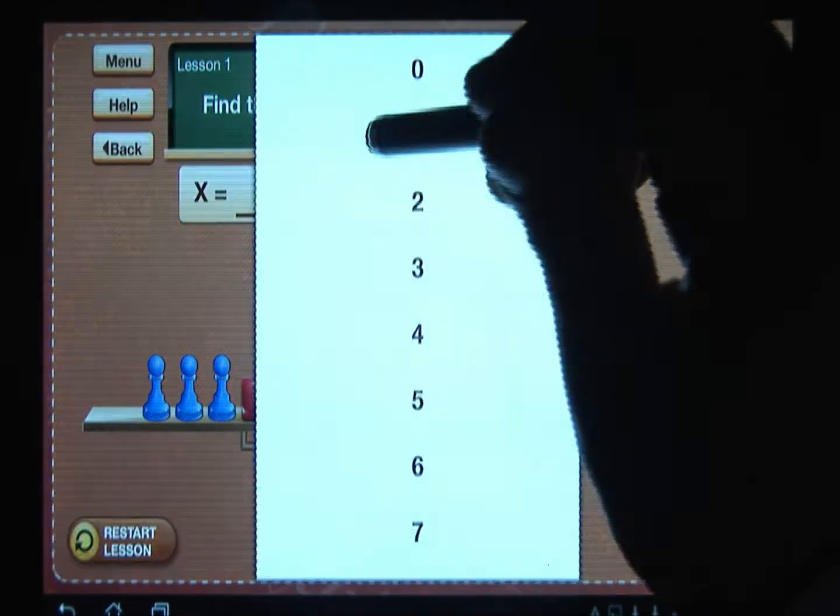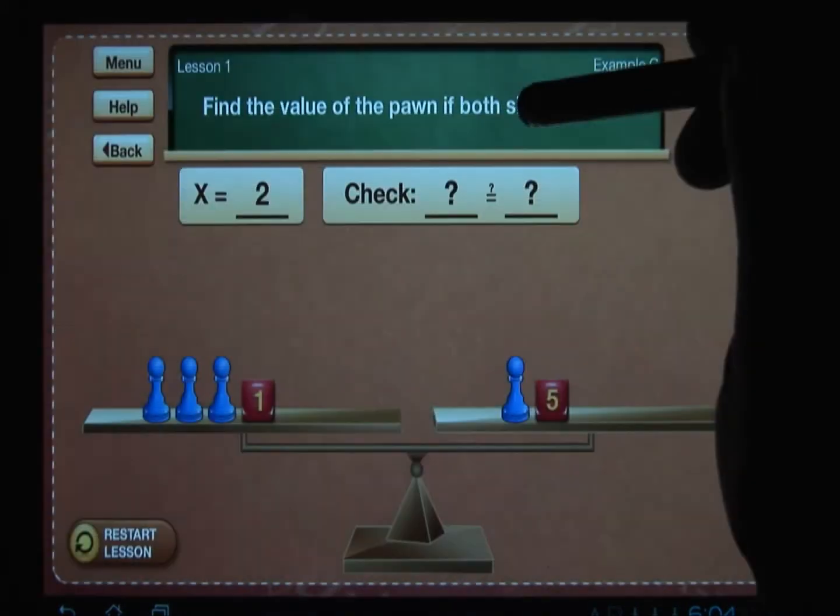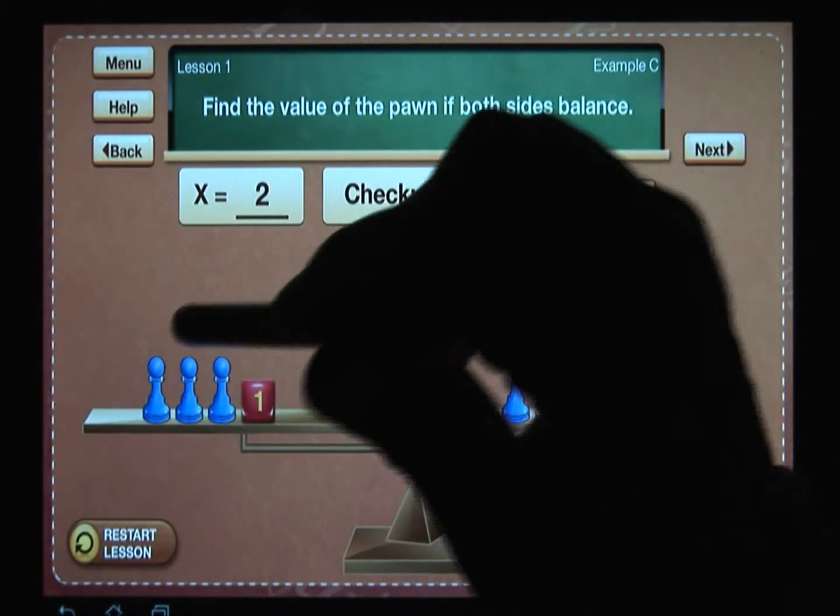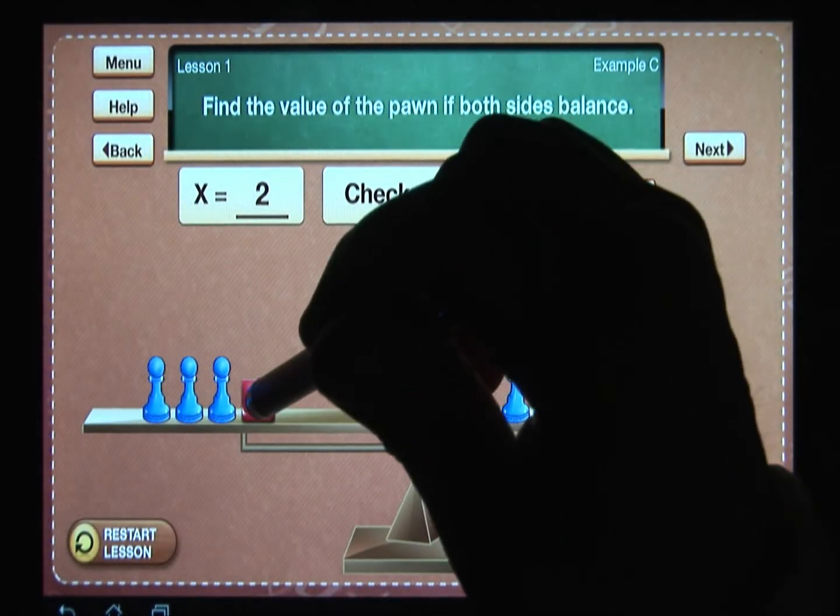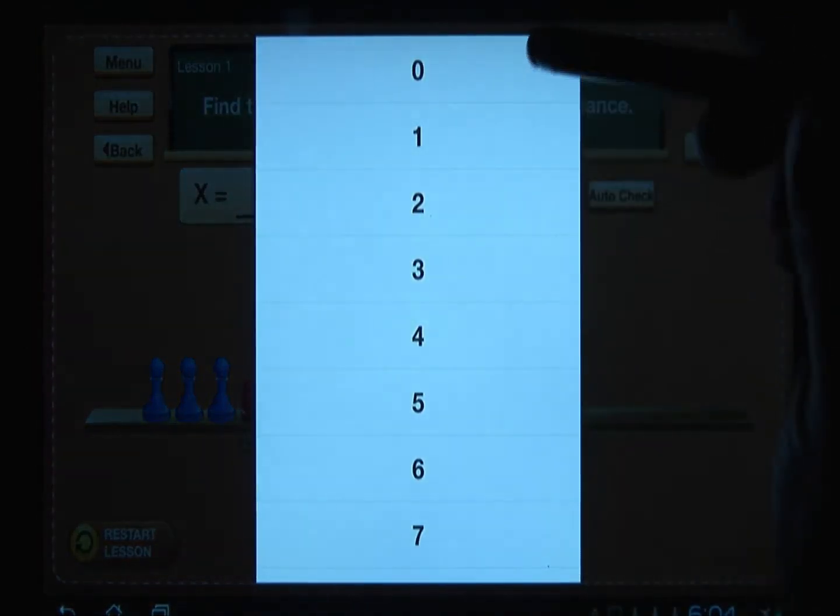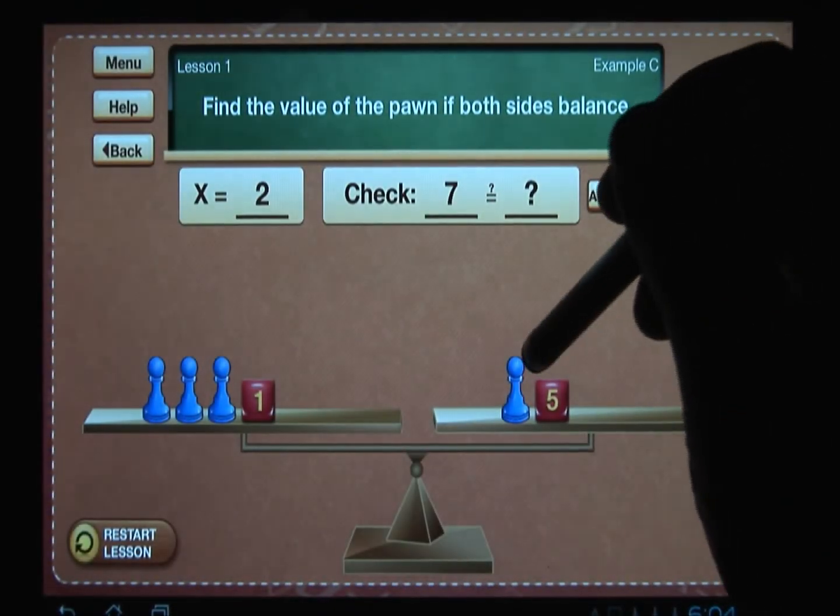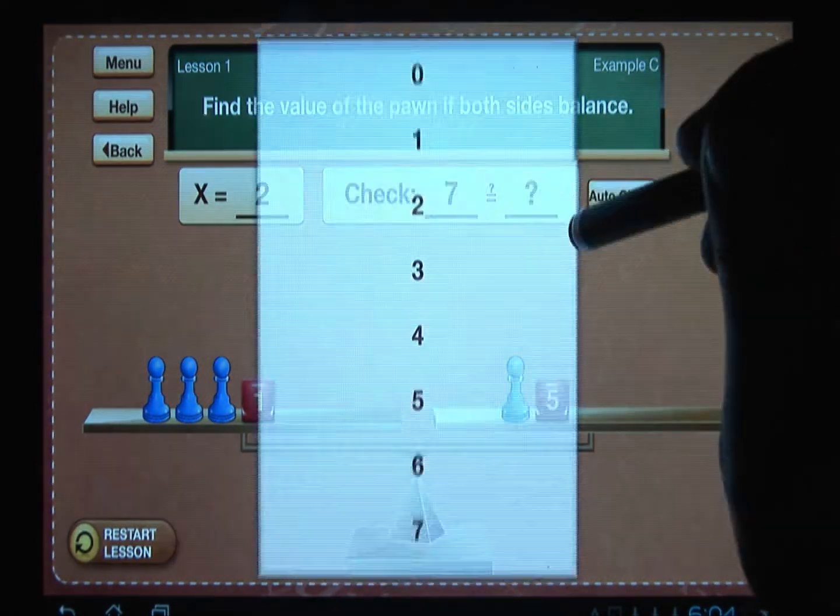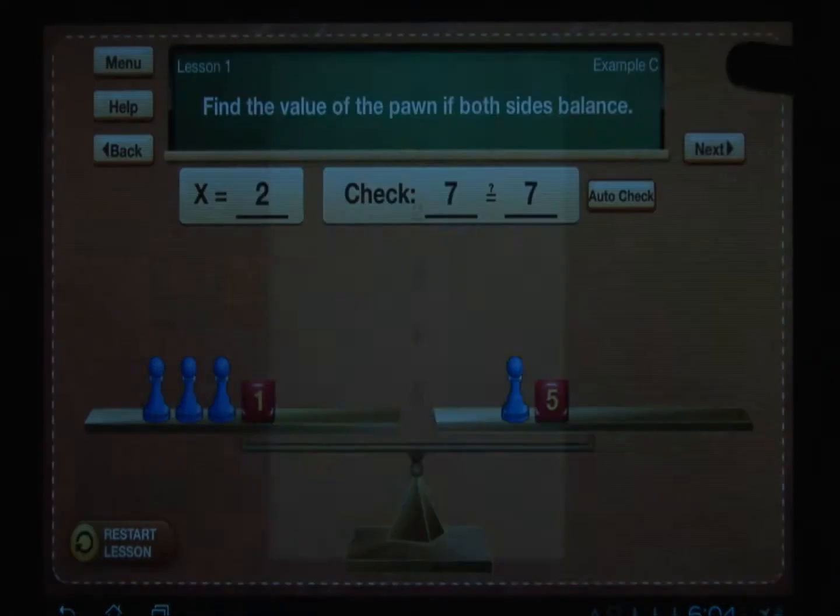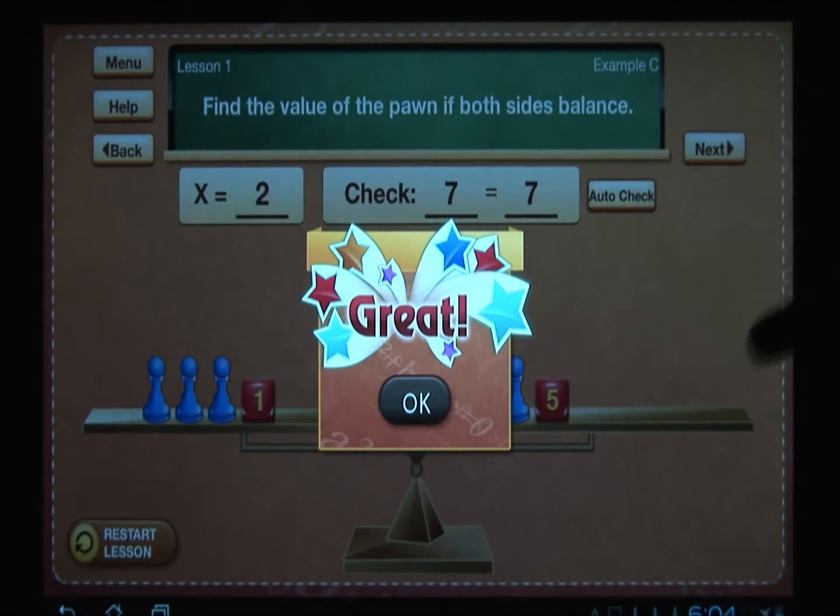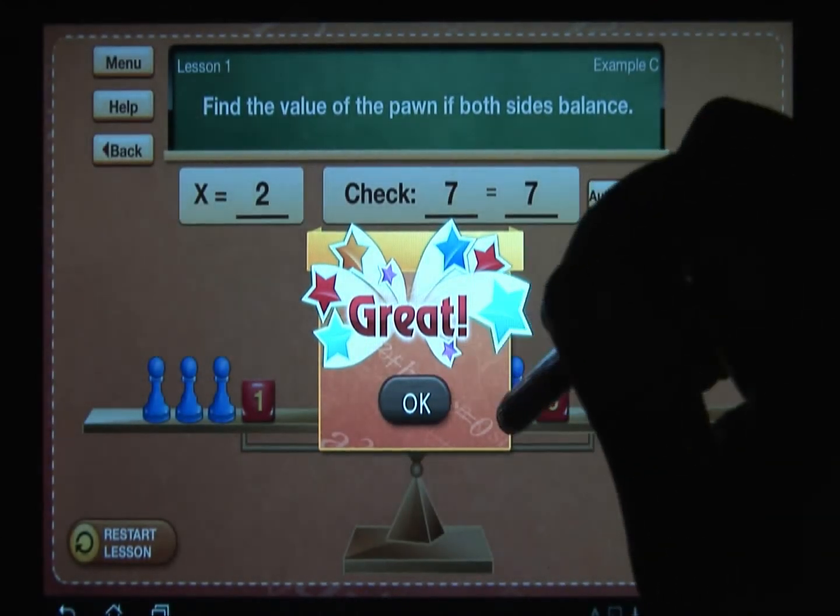Okay, so one is not the answer to the problem. Let's try x equal to two. When the pawn has a value of two, I have two, four, six, and one is seven. So on the left side I have a seven. And on the right side I have two and five which is also seven. And so I get a pop-up saying that's great, and so that's the answer to that problem.